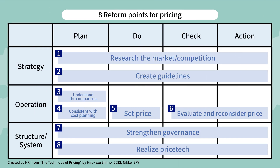Here are eight reforms you can start working on tomorrow to raise your competency in pricing. In formulating guidelines, formalizing know-how and best practices can eliminate dependency on individuals and improve the quality of business, strengthen organizational governance, and lead to organizational reforms. You can exercise vertical governance to clarify the process, decision-making criteria, and the role of pricing from drafting to approval. You can also exercise horizontal governance for region and function to ensure normal business flow between areas and achieve consistency among functions.